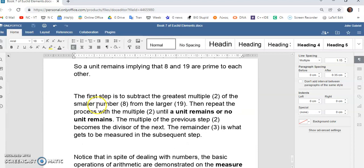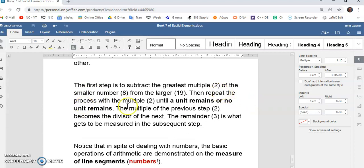So, the first step is to subtract the greatest multiple, which is 2, of the smaller number 8 from the larger number 19. Then repeat the process with the multiple 2 until the unit remains or no unit remains.